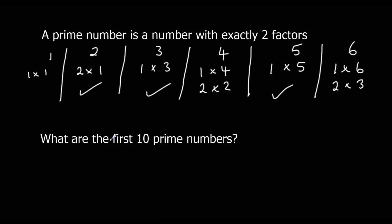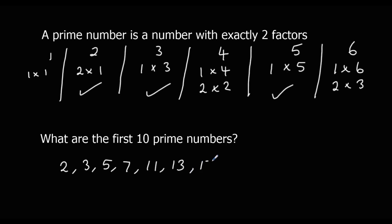So the first 10 prime numbers: we've got 2, 3 and 5 already. 7 is only 1 times 7, so 7 is prime. 8, 9 and 10 aren't prime. 11 is a prime number. 12 is not prime. 13 is a prime number. 14, 15 and 16 aren't. 17 is prime. 18 isn't. 19 is prime. 20 and 21 aren't. 22 isn't, but 23 is. 24 and 25 aren't. 26 and 27 aren't. 28 isn't, but 29 is. So those are our first 10 prime numbers: 2, 3, 5, 7, 11, 13, 17, 19, 23 and 29.